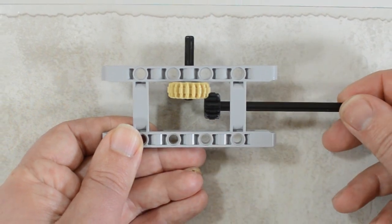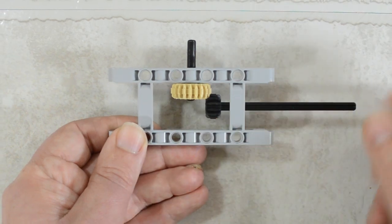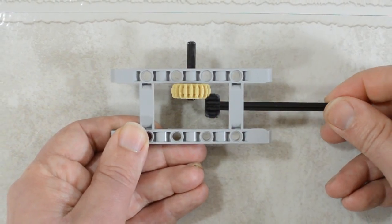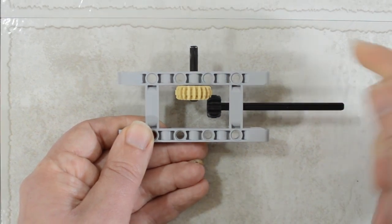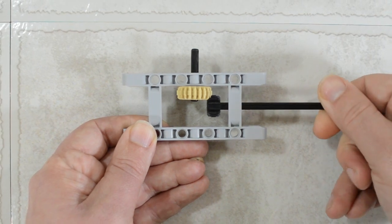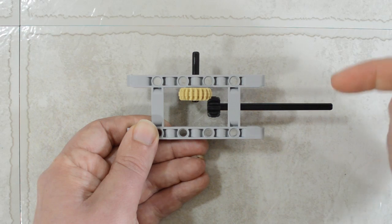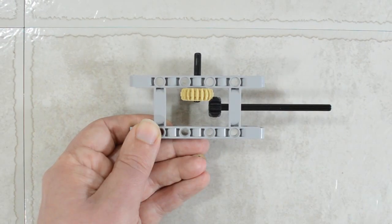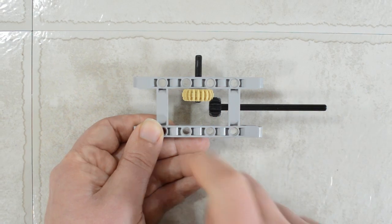As we turn our small bevel gear, it will turn our large bevel gear. And notice that they will turn those axles in the same direction. So unlike other gears where it would be turning in the opposite direction when you pair up two gears with bevel gears, they actually turn with the same rotation.